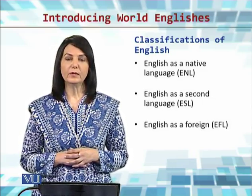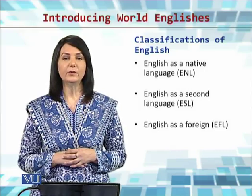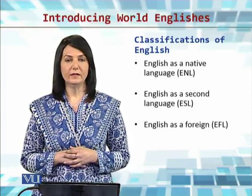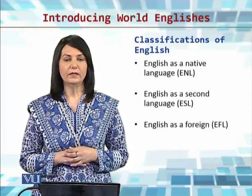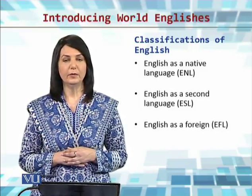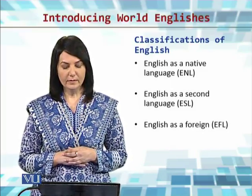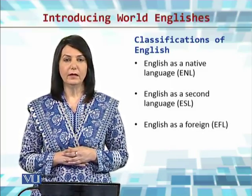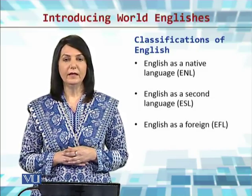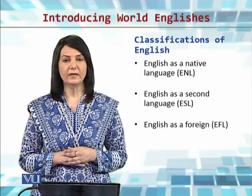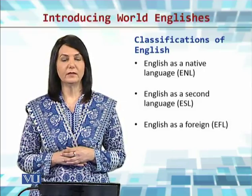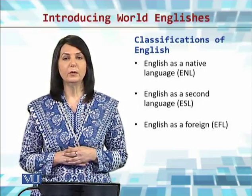Apparently these two classifications look very similar, but there are two distinct differences. One is that Kachru allows for different varieties of English, all of which are equally valid in their own contexts. Whereas the other model, where we classify English as ENL, ESL, and EFL, only believes in the native varieties of English and also suggests that the native varieties are superior to all the other varieties.